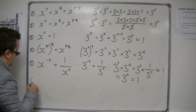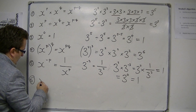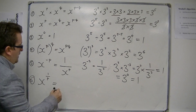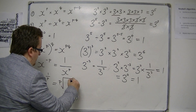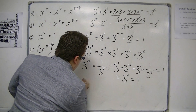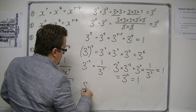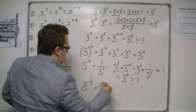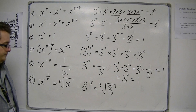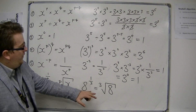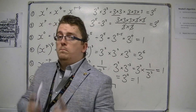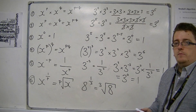And finally, last but not least, is x to the power of 1 over p. This one is the p-th root of x. So if we had 8 to the power of 1 third, then that is the cube root of 8, which would be 2. So this is how an index is used, and these are the 6 rules that you must remember and must be able to use.